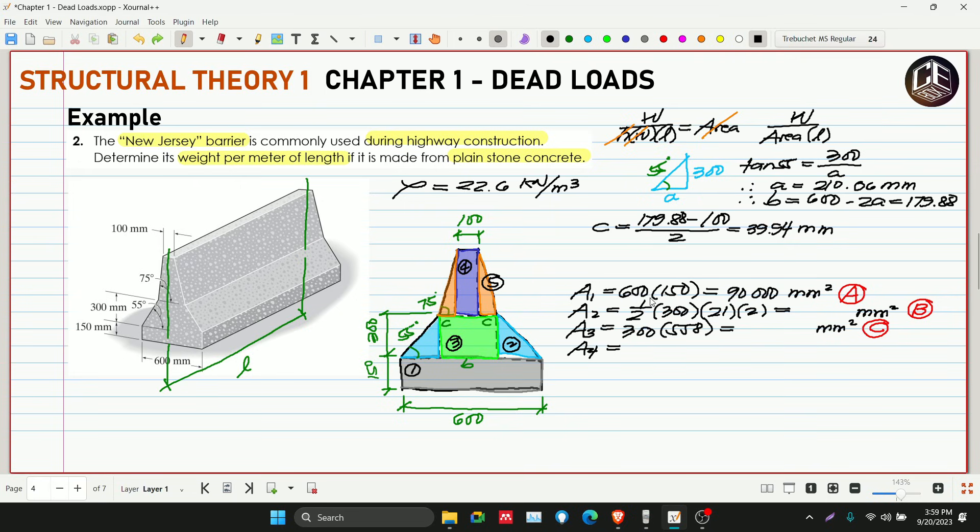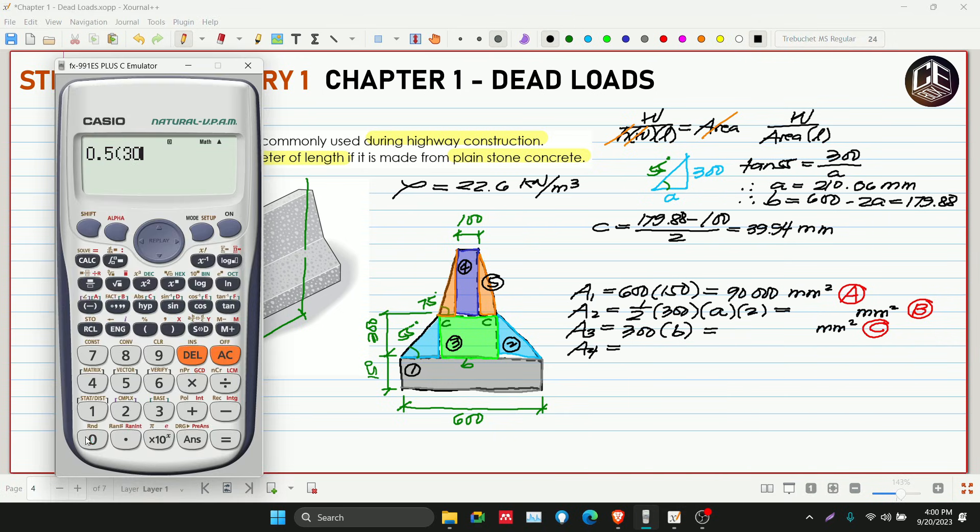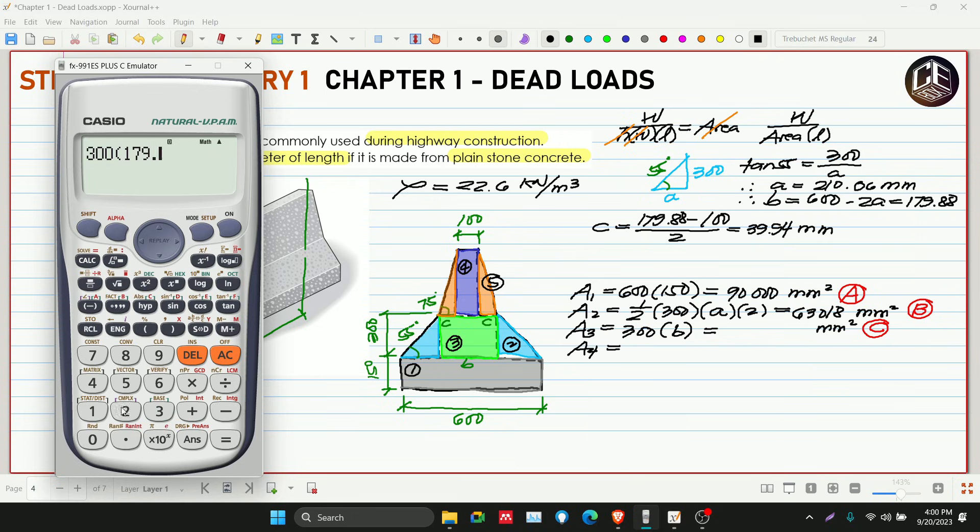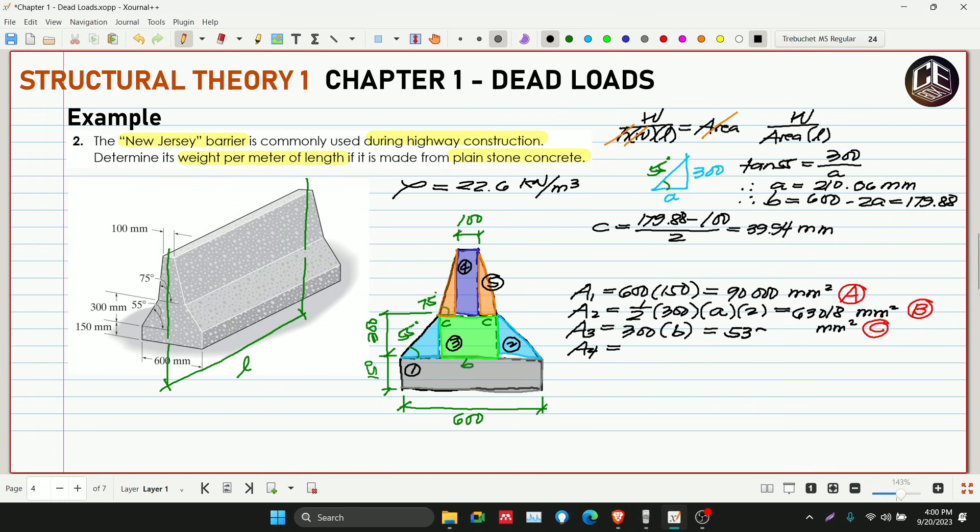Tama naman tayo sa area 1. Area 2 na lang is gawin na natin itong A. So this is A. And this is area 3 multiplied by B. So 1 half o 300 multiplied by A na 210.06, then multiplied by 2. Ang high 300, ang base is 210.06 then multiplied by 2. So 63,018. So store natin sa alpha B. And then area 3, 300 multiplied by B na 179.88. So 53,964.